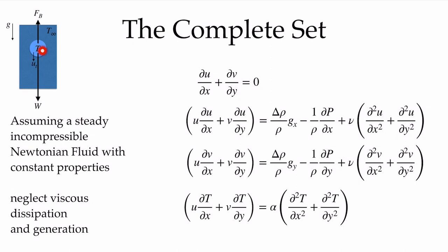If we have a fluid where there are temperature differences — so the main flow is at a temperature T infinity and there's some portion of the flow that has a different temperature — we're going to give rise to a net force, the difference between the buoyancy and the weight of that region of fluid, which is going to be given by that change in density relative to the background fluid times g. We have delta rho over rho times our acceleration due to gravity and the component in the x and y direction. As I've drawn it here, I only have a y component, but for general purposes we'll leave it in there.